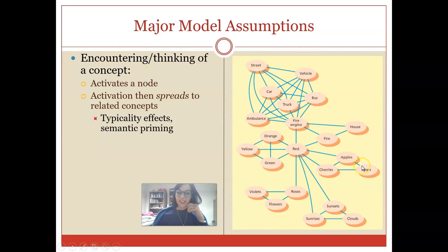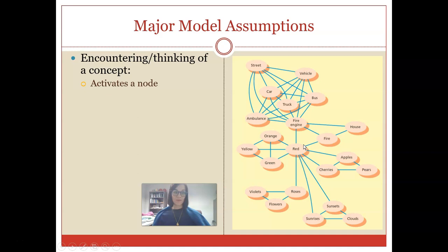What happens when we encounter or think of a certain concept? Ideally that's going to activate a node. Activation will then spread to related concepts. This can account for things like typicality effects. For example, notice that apples and cherries and pears are all very closely connected. If we had another item like a tomato, that would probably be less connected to apples, pears, and cherries, and thus it would receive less activation. Typicality effects where more typical items are easier to remember and easier to verify can easily be explained by this model, as can something like semantic priming. If I prime you with the word red, you're going to be more likely to think of words like roses because they are very tightly connected.